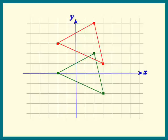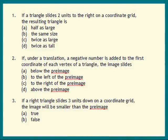Well, did you get the answers right? Here they are. Number one, when a triangle slides two units to the right, the resulting triangle is the same size.